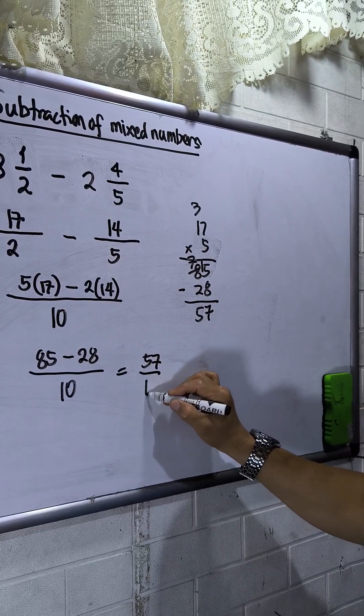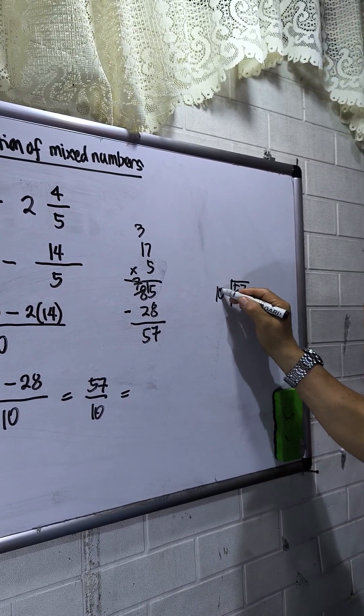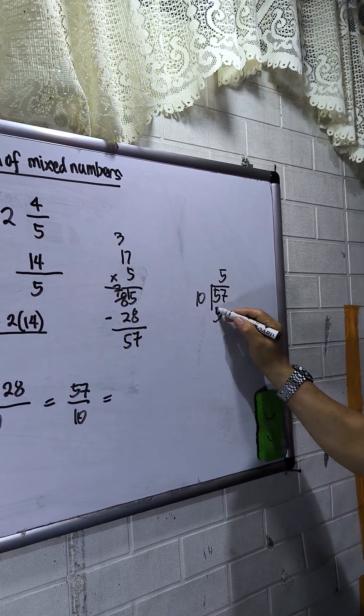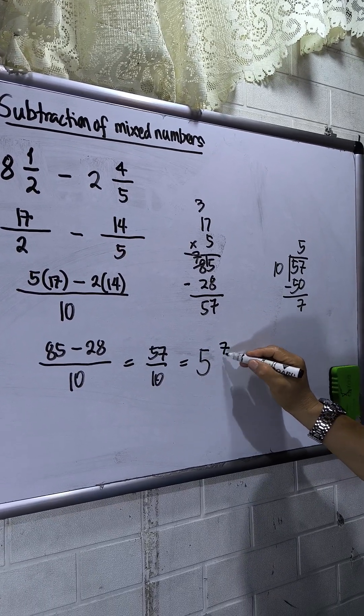57 over 10. So 57 divided by 10, this is 5 and 50, so 7. So the final answer will be 5 and 7 over 10.